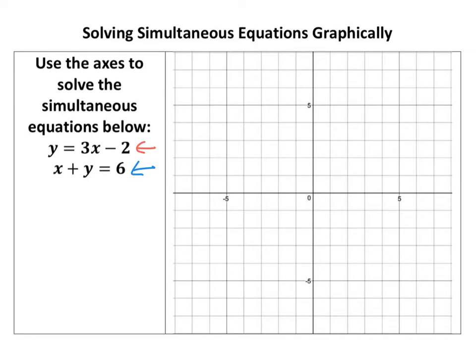First of all, we need to plot the first graph: y equals 3x minus 2. We should know it's y equals mx plus c, where c is the y-intercept and m is the gradient.